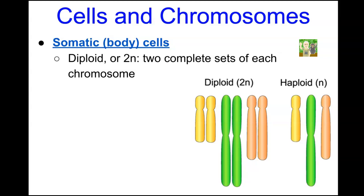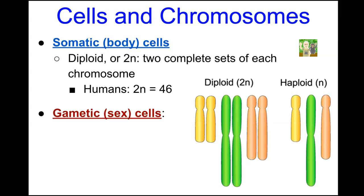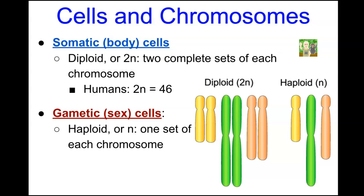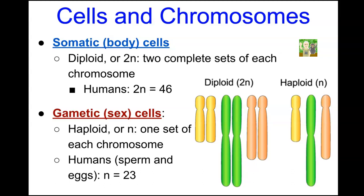Somatic cells include nerve cells, heart cells, muscle cells, skeletal cells, and skin cells. The other type are gametic cells or sex cells, formed via meiosis — the sperm and the female egg, also called the female ovum. These cells are haploid, abbreviated simply as n, meaning they have half the chromosome number of diploid cells.